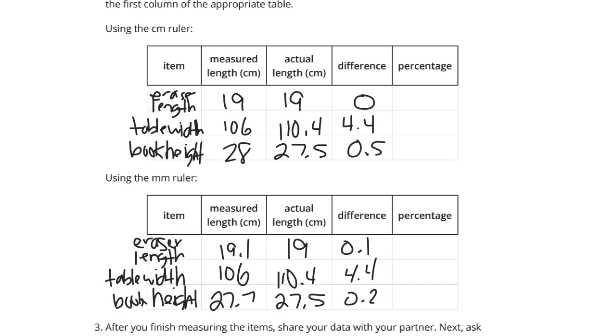Now, the percentage, we're going to take the difference and divide by the actual. So, 0 divided by 19 is 0%. 4.4 divided by 110.4 is going to get us about 4%. 0.5 divided by the actual 27.5 would get us 1.8 percent.